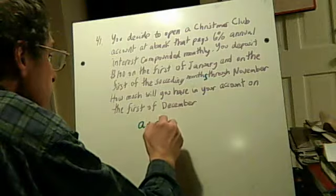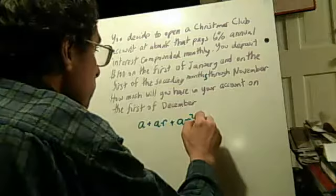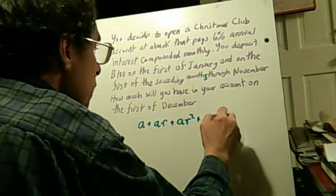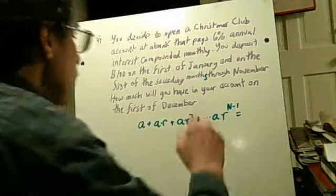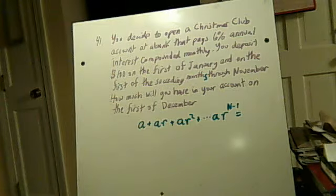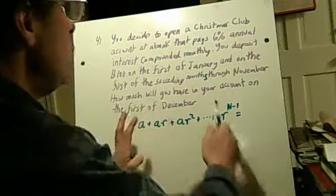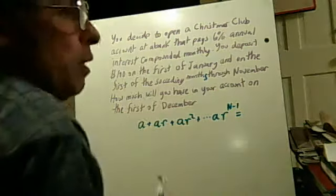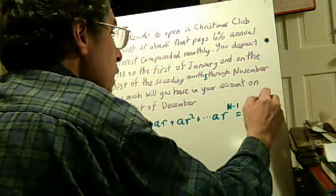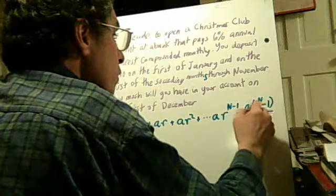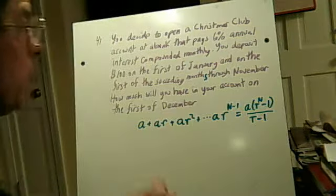plus a times r plus a times r squared plus dot dot dot ar^(n-1). In other words, there are n total terms. The first term doesn't have an r, that's why it ends with n minus 1, but the total number of terms is n. That's going to be equal to a times (r^n - 1) over (r - 1). We're going to use this formula to solve this, so I just thought I'd write it down first.